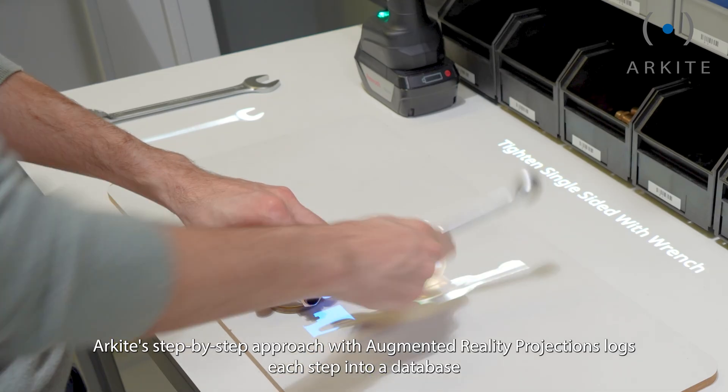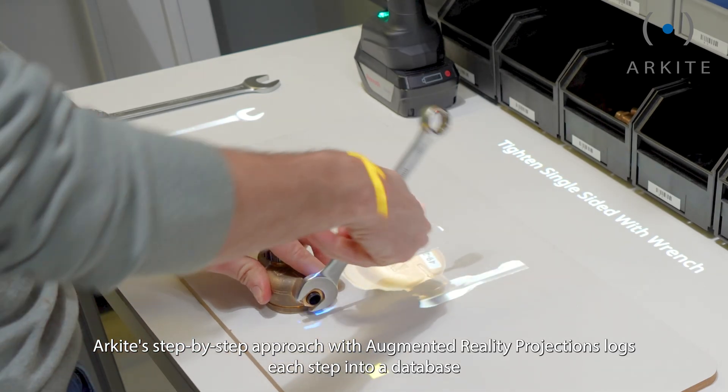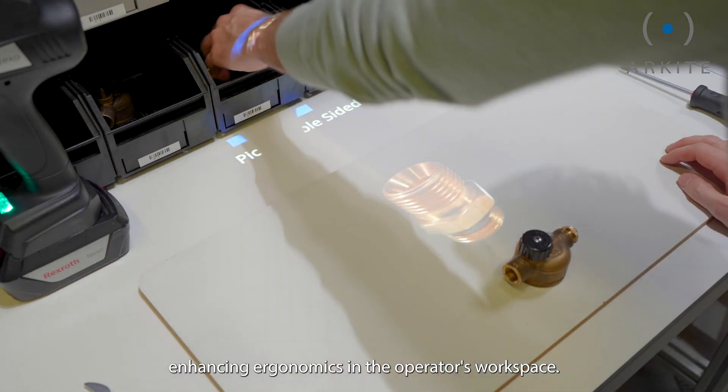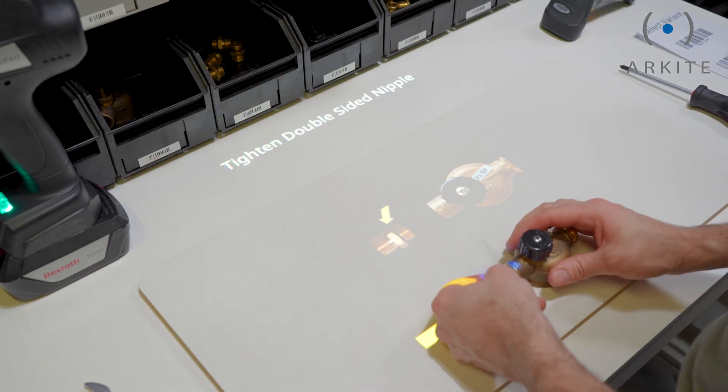Archite's step-by-step approach with augmented reality projections logs each step into a database, enhancing ergonomics in the operator's workspace.